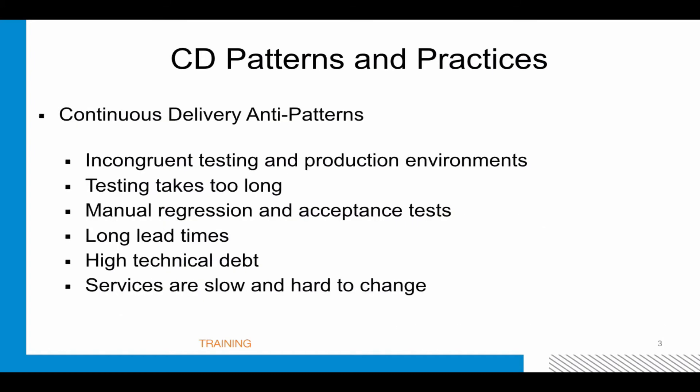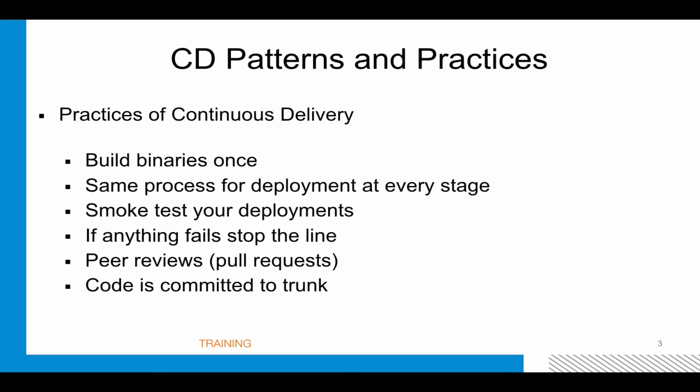The anti-patterns are the signs that things are going wrong: incongruent test and production environments, tests taking too long, manual regression and acceptance tests, very long lead times, high technical debt, and services that are slow and hard to change. Some consistent considered practices: build binaries once, use the same process for deployment at every stage, smoke test your deployments — if anything fails, stop the line, like those gates in the green/red slide. Another key concept we'll see in GitHub is the pull request, a brilliant Git implementation that acts as a forcing function to collaborate. Most people use it effectively for peer code review; some organizations even use rotating alternative teams so your peer reviewer is someone not on your team. Code is committed to trunk.